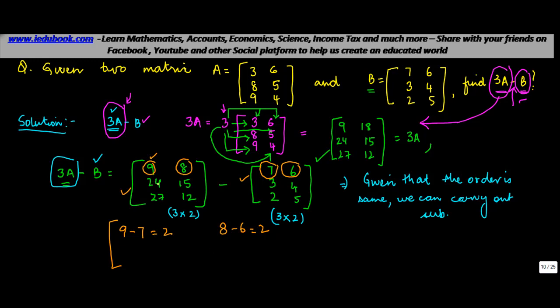Then second row second column is 4. Third row first column, you pick up 27 and subtract 2. Third row second column, you pick up 12 and subtract 5.